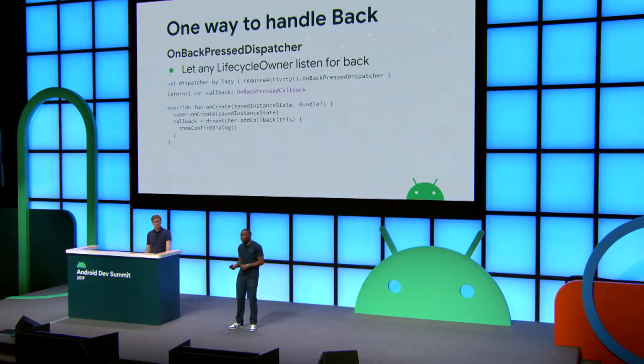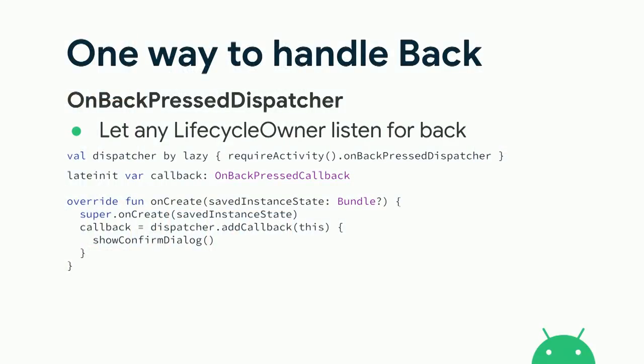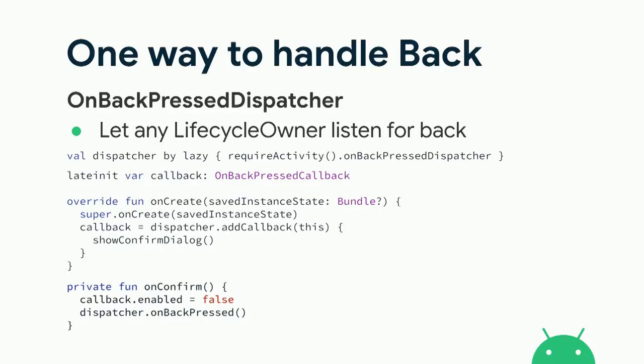Another longstanding issue is handling the system back button from a fragment. To address this, we introduced OnBackPressedDispatcher. Instead of a fragment-only API, any component can now handle a back event via a new API on the base Activity class, ComponentActivity. A fragment grabs a dispatcher from its activity and creates a callback using a Kotlin lambda, passing the fragment as a lifecycle owner. For example, when the user presses back, we show a confirm dialog; if they want to exit anyway, we disable the callback and use the dispatcher to actually perform the back press.